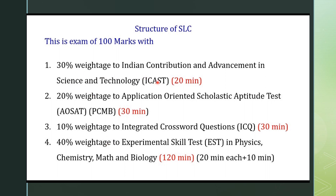There are 3 parts of the state level camp. Part 1: Indian contribution and achievement in science and technology. Part 2: 20% weightage to application-oriented scholastic aptitude test in physics, chemistry, maths and biology. Part 3: 10% weightage to integrated crossword questions. Finally, 40% weightage to experimental skill test.